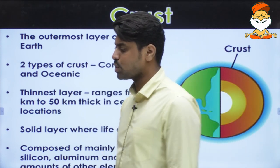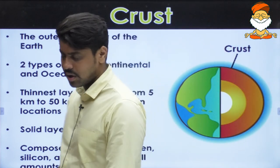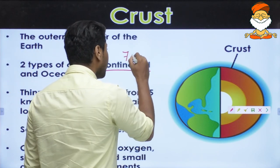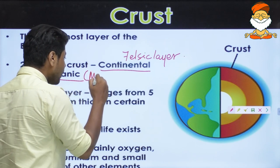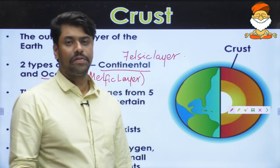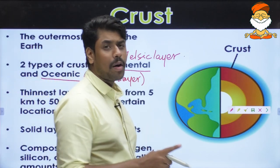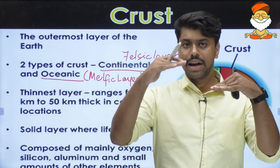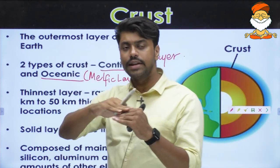Even though it is the outermost layer, the crust is divided into two layers: the continental crust and the oceanic crust. The continental crust is also called the felsic layer, and the oceanic crust is called the mafic layer. Remember: continental is always on top of oceanic, so the felsic layer is above the mafic layer.